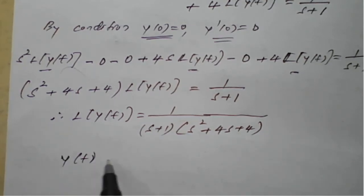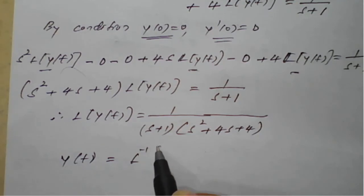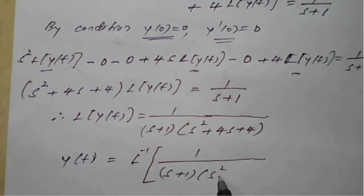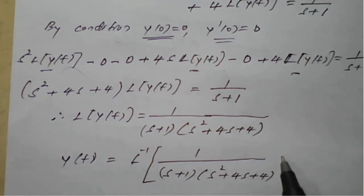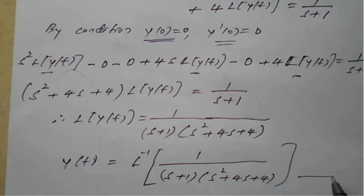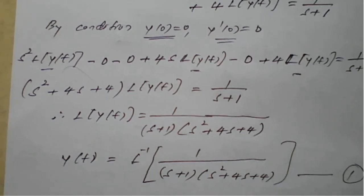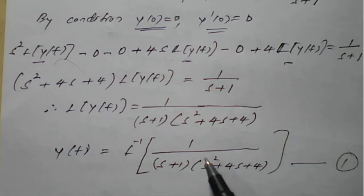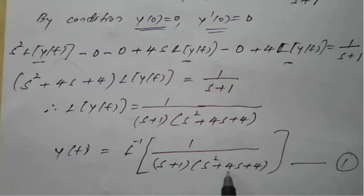So y(t) = L⁻¹{1/[(s+1)(s² + 4s + 4)]}. This is of a form where we can apply either the convolution theorem or the partial fraction method. We will decide which is easier and simplify the right-hand side separately before substituting back.